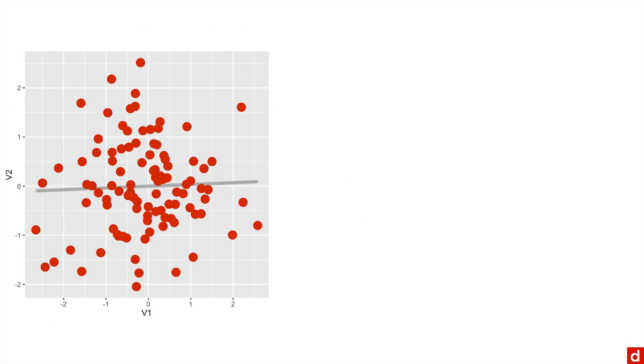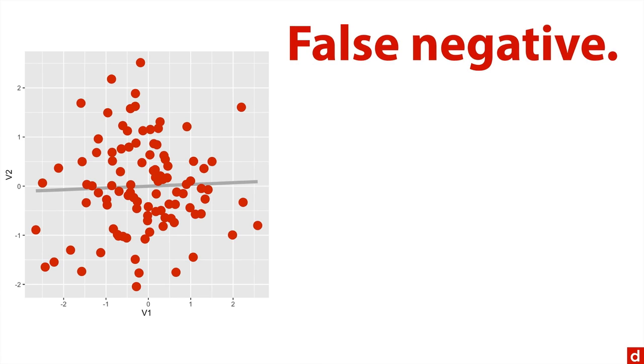Then there's a false negative. This is when the data looks random but in fact it is systematic or there's a relationship. For instance, this scatter plot looks like it's pretty much a zero relationship. But in fact, this came from two variables that were correlated at 0.25 - that's a pretty strong association.